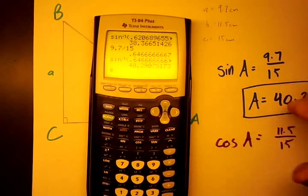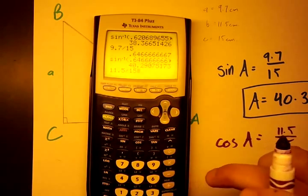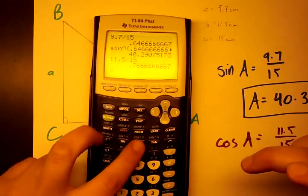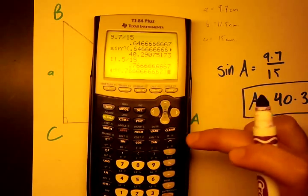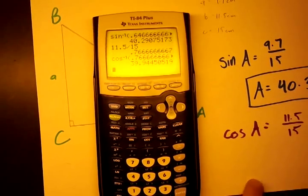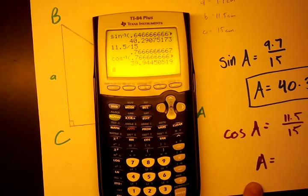Again, we'll pull out our calculator. We'll do 11.5 divided by 15, and we'll take the inverse, so hit second cosine of this number. Because it's 39.9, A according to the cosine function equals 39.9 degrees.